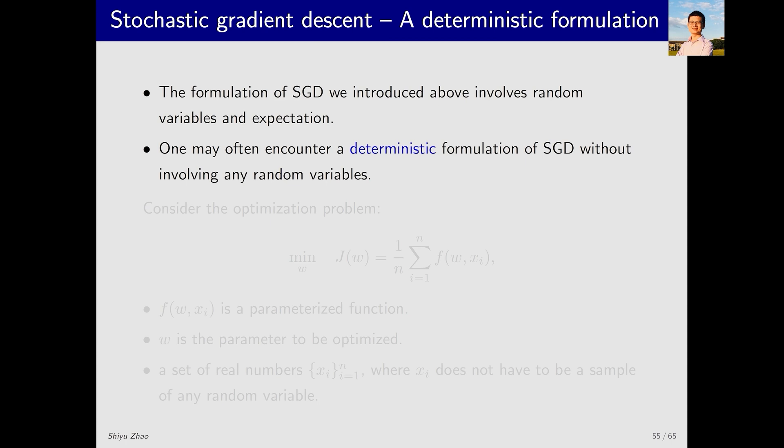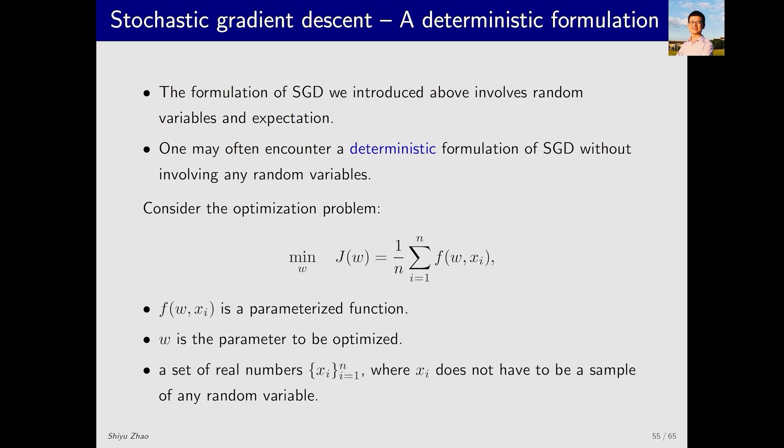Our previous formulation of SGD involved random variables x, and the objective function involves an expectation. However, we may often encounter another formulation in the literature that does not involve any random variables. Let's see if you have encountered such a formulation before.